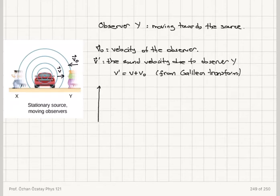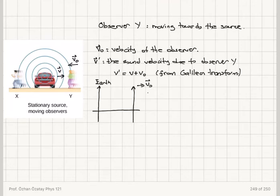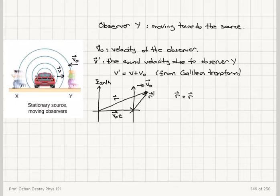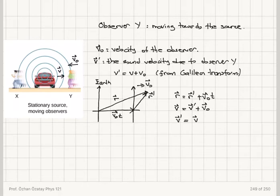To recall the Galilean transformation: if we have the Earth reference frame and another reference frame moving with velocity v_0 with respect to it, reporting the position of an object as r and r prime, in time interval t the two origins have moved apart by v_0 times t. The velocity v in the Earth frame equals v prime in the moving frame plus v_0. So v prime equals v minus v_0.